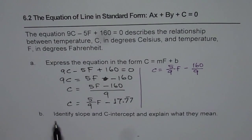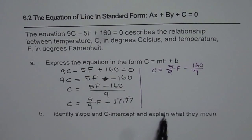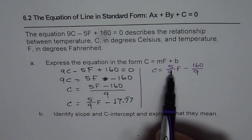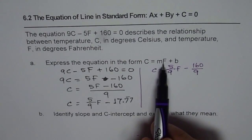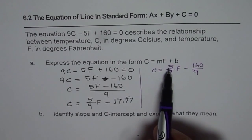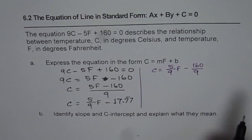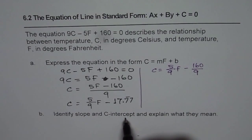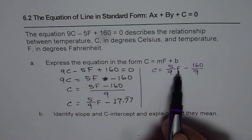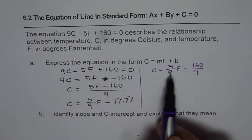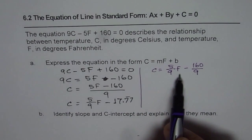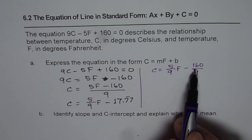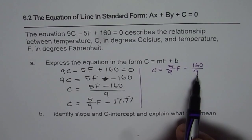Now the question asks us to identify the slope and C-intercept and explain what they mean. Comparing with C equals MF plus B, the coefficient of F is the slope, which is 5 over 9. The C-intercept means the value of C when Fahrenheit is 0, which in this case is minus 160 divided by 9.